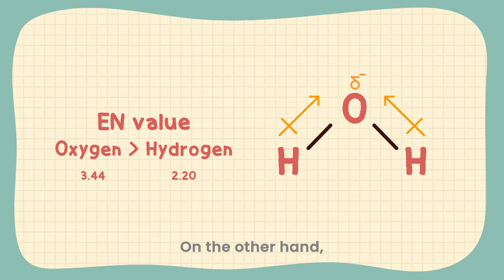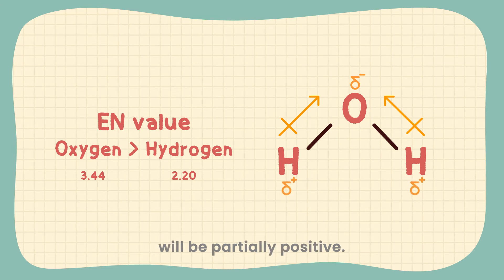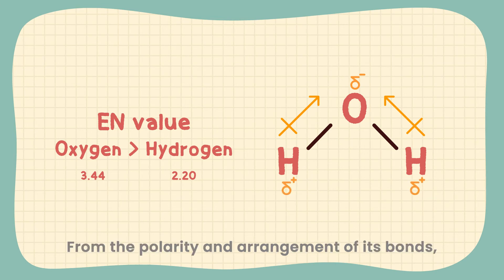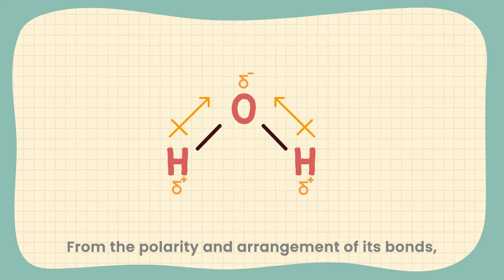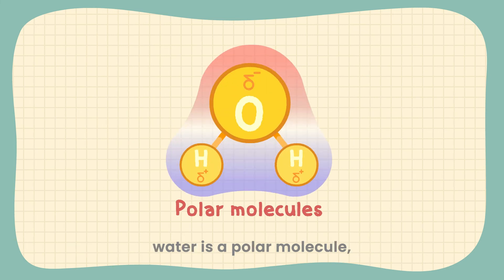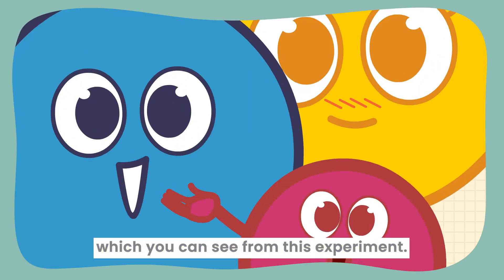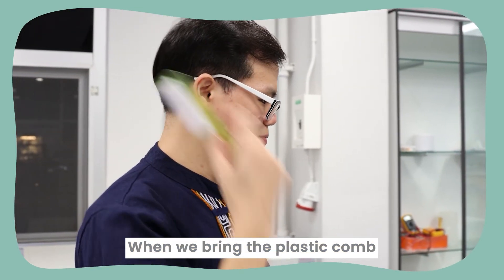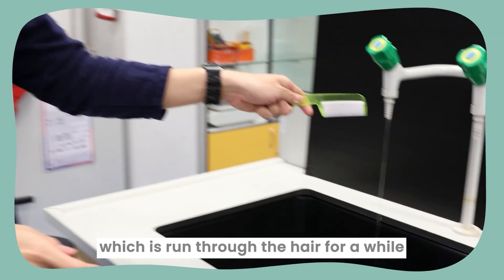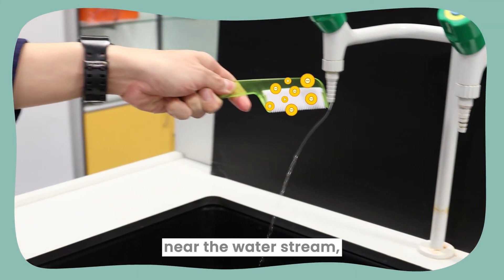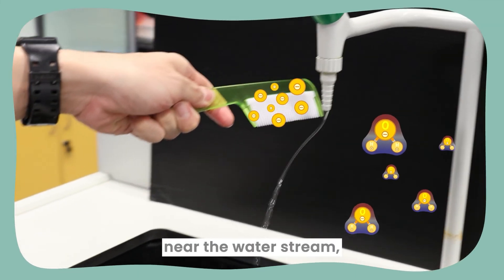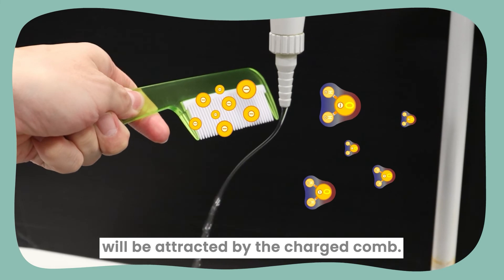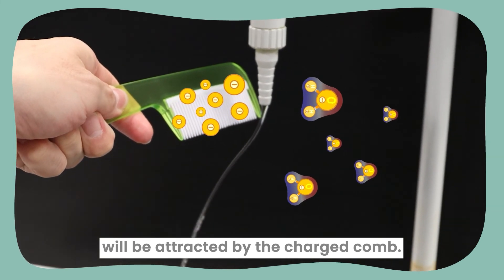On the other hand, the hydrogen atom with lower EN will be partially positive. From the polarity and arrangement of its bonds, water is a polar molecule, which you can see from this experiment. When we bring a plastic comb, which has been run through hair for a while, near the water stream, the water stream will be attracted by the charged comb.